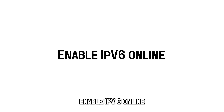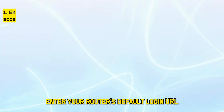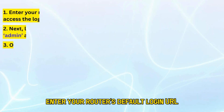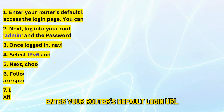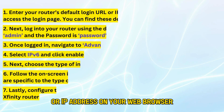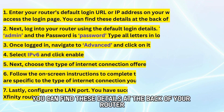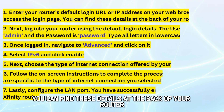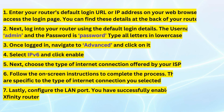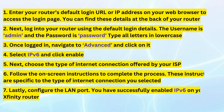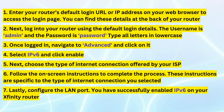To enable IPv6, enter your router's default login URL or IP address in your web browser to access the login page. You can find these details at the back of your router. Next, log into your router using the default login details. The username is 'admin' and the password is 'password'. Type all the letters in lowercase.